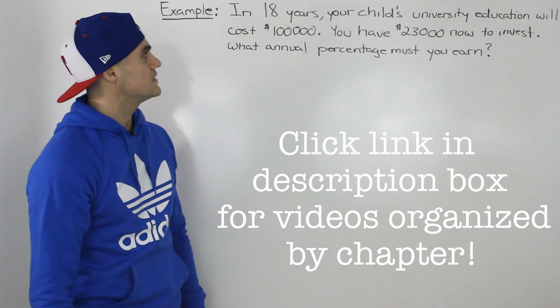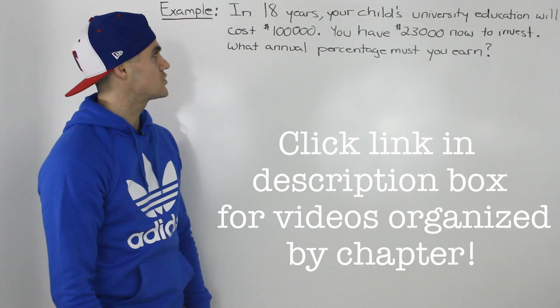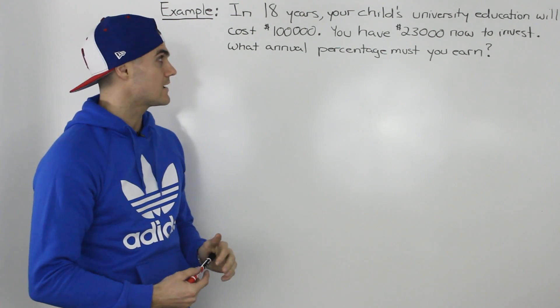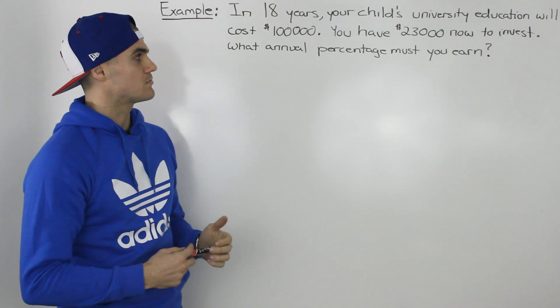Moving on to the next example. In 18 years, your child's university education will cost $100,000. You have $23,000 to invest today. What annual percentage must you earn?